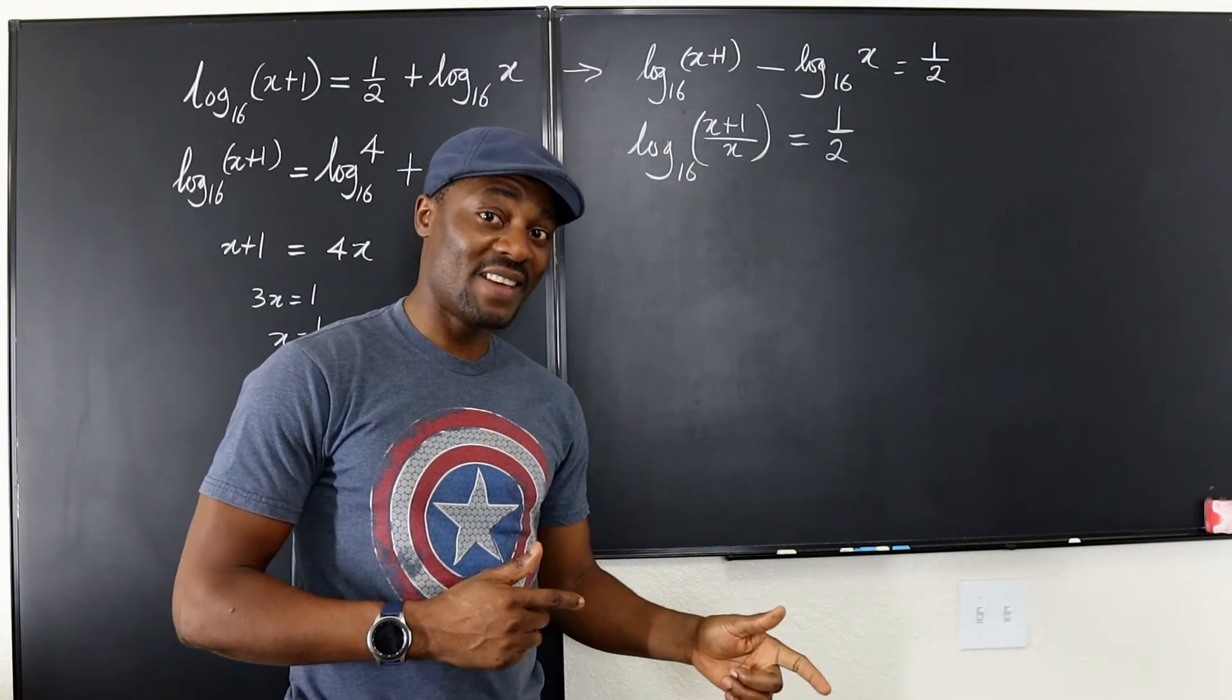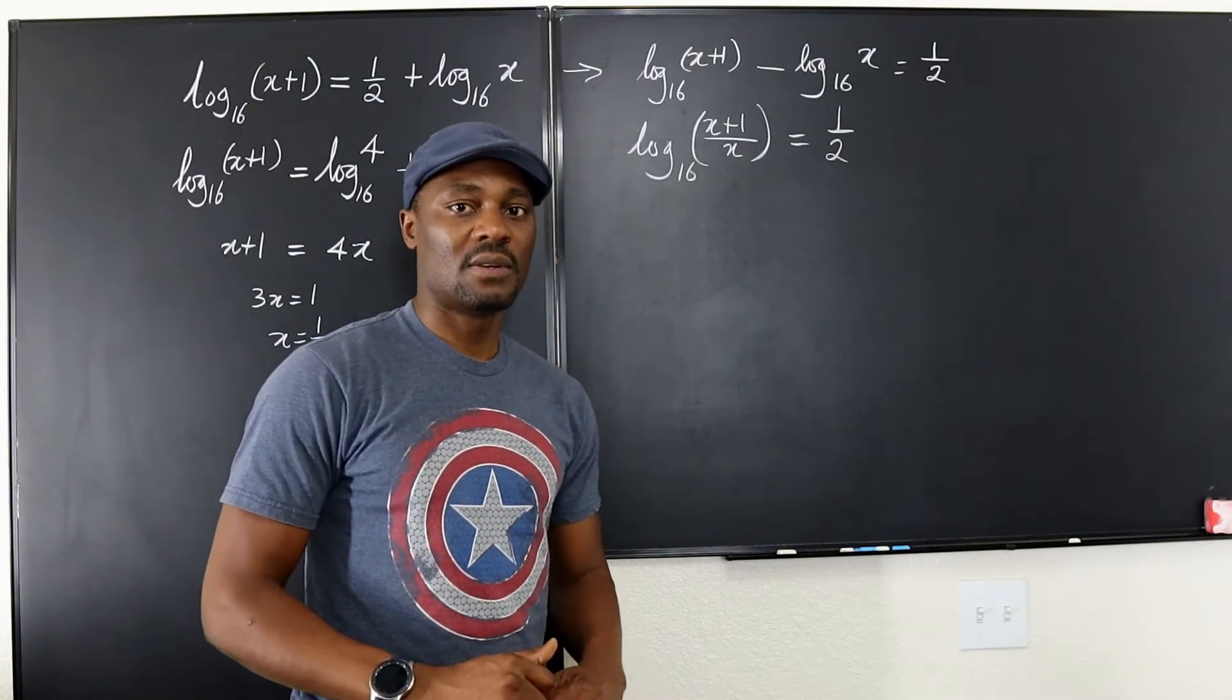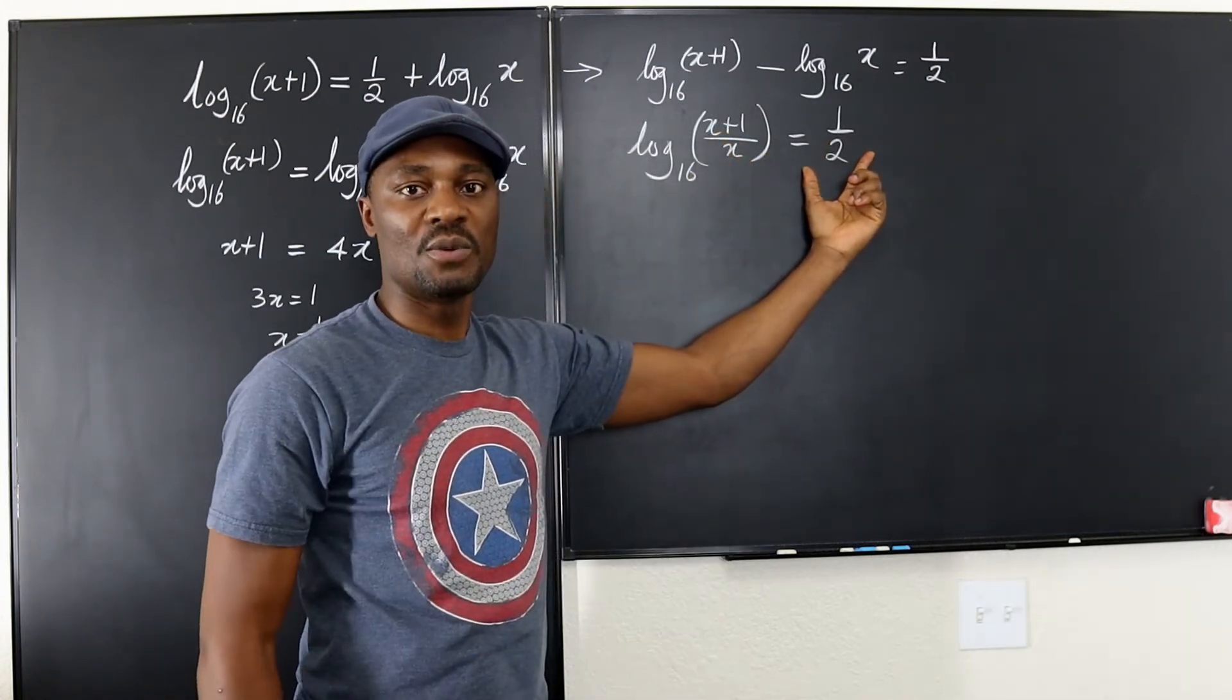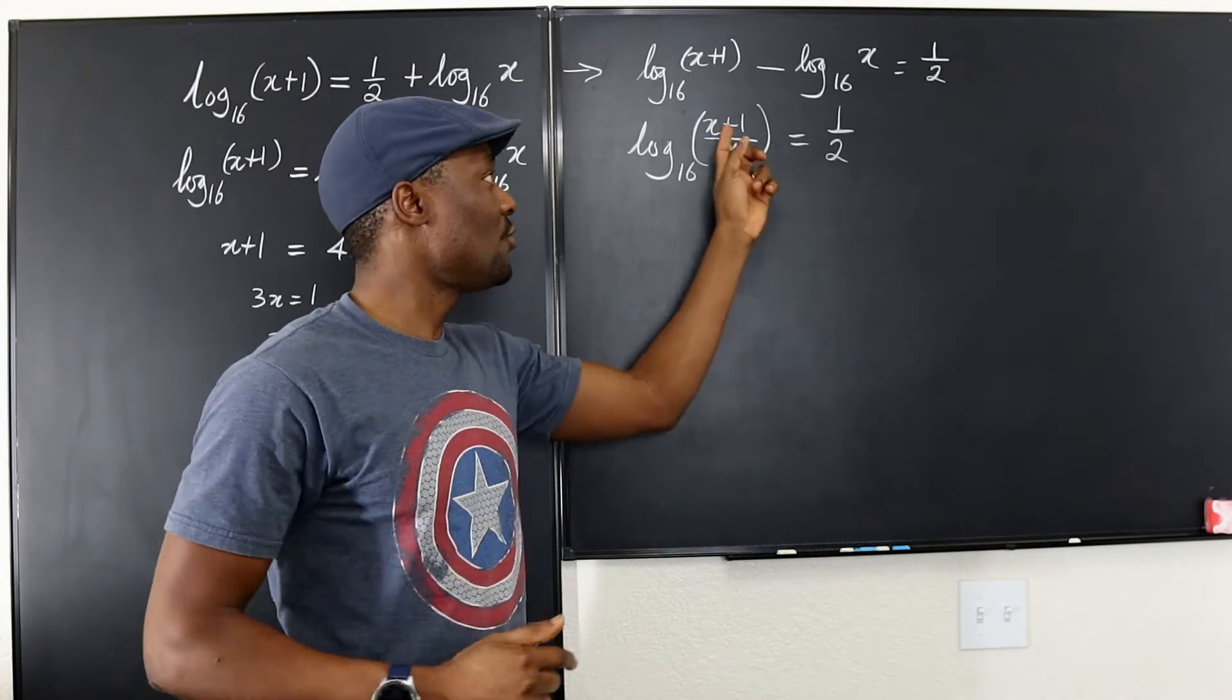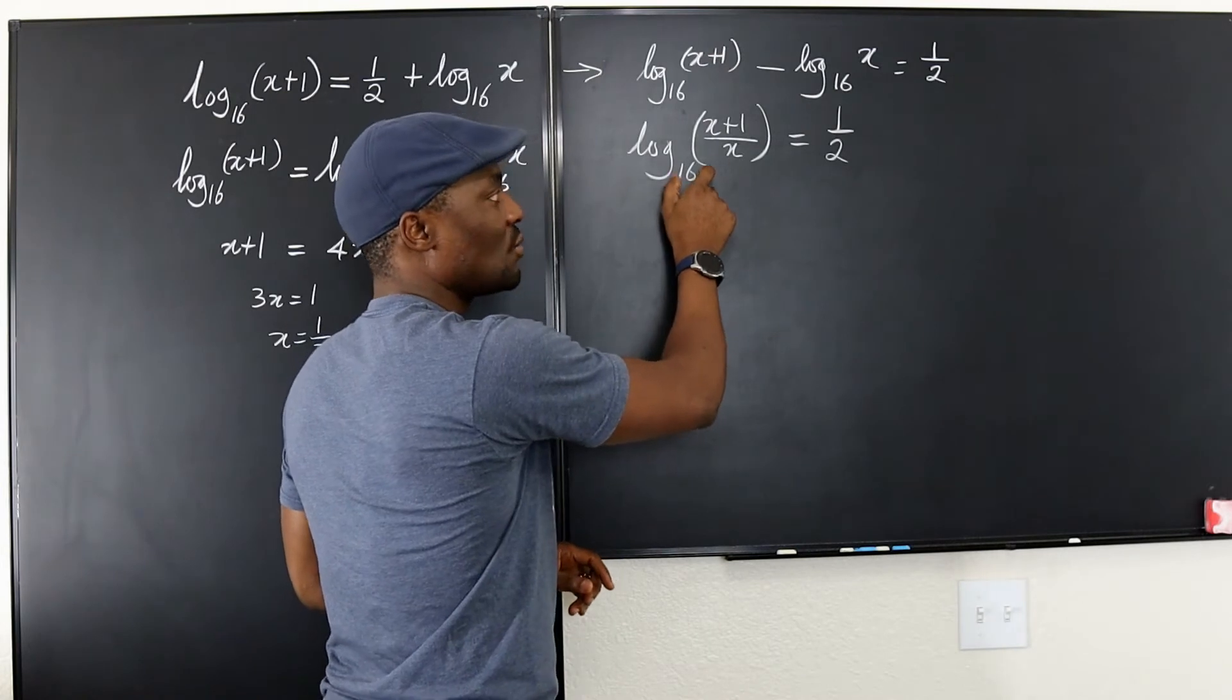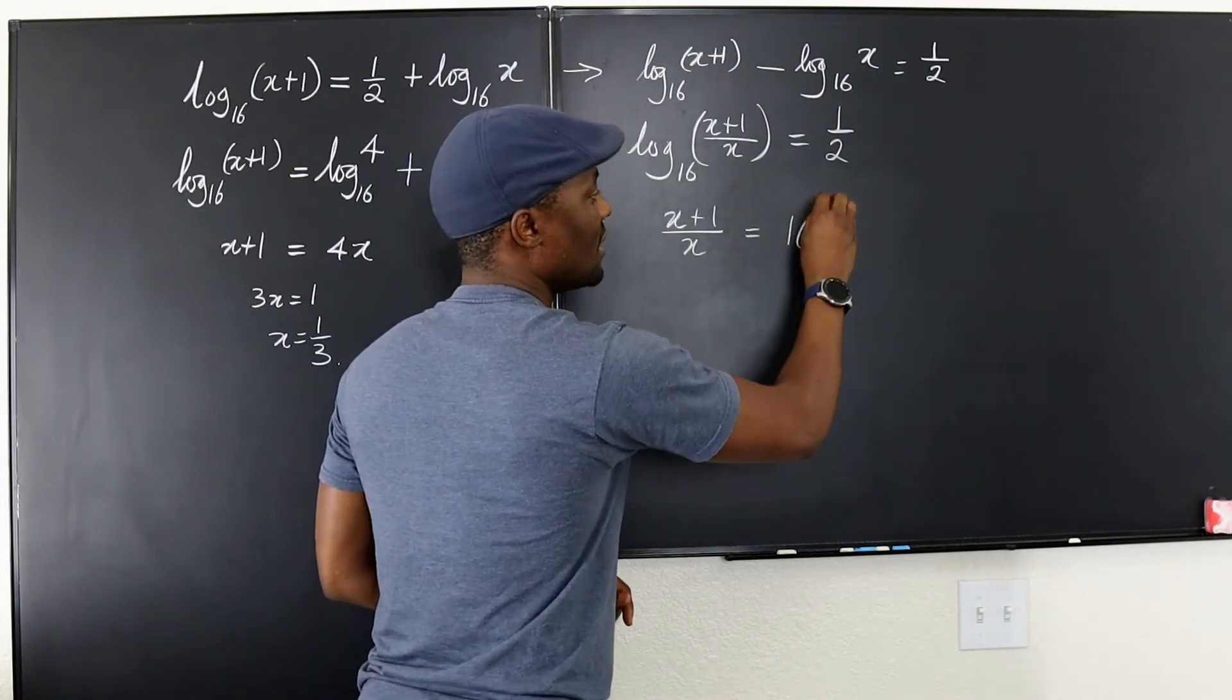We end up with the logarithm of x plus 1 divided by x to base 16 is equal to 1 half. Now, so the next thing to do is use our brains. The definition of logarithms has to come in again. The logarithm of an argument to a base is the power to which the base must be raised to obtain the argument. Let that sentence remain on your mind permanently. So the power to which 16 must be raised to obtain this argument is this, the logarithm, which is 1 half. So which means that x plus 1 over x is equal to 16 to the 1 half.